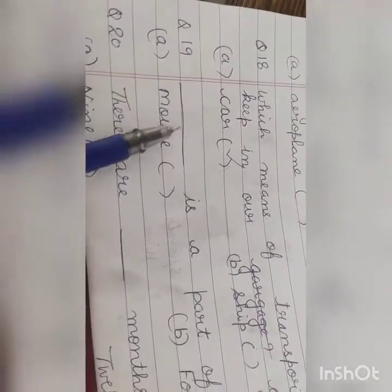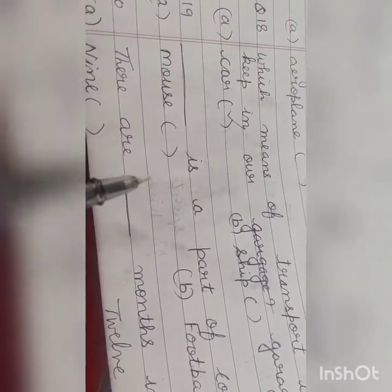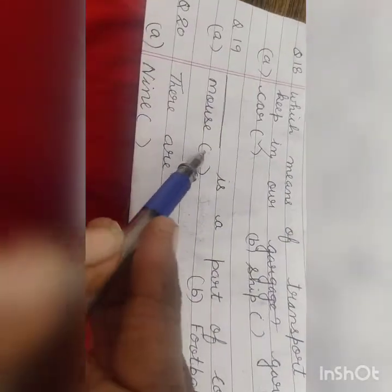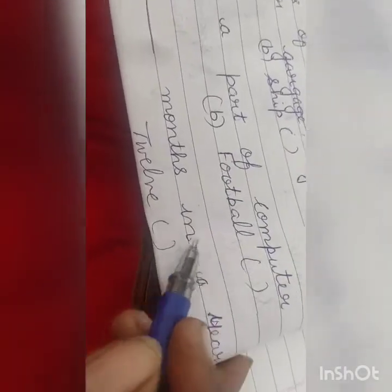See the 19th one. Dash is a part of computer. Computer का part कौन सा है? Mouse की football. Mouse is a part of computer. So put a tick mark on mouse. See the 20th one. There are dash months in a year. एक साल में कितने महीने होते हैं? 9 months होते हैं कि 12 months होते हैं? 12 months.